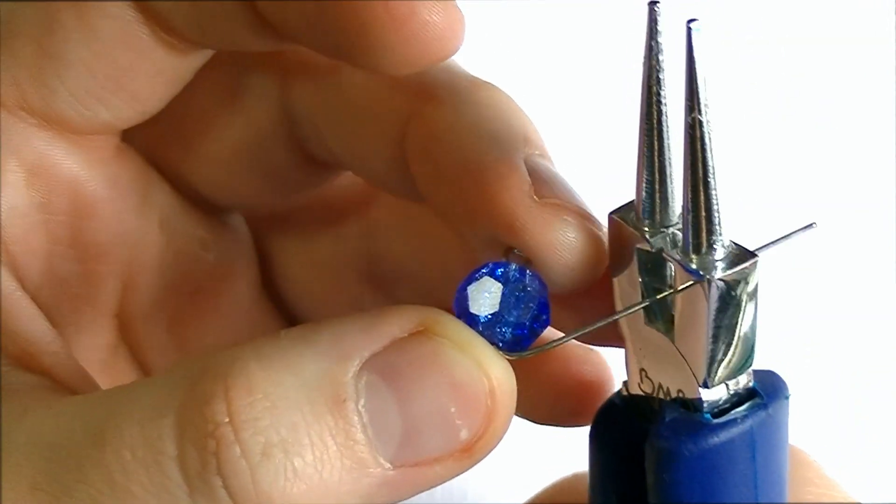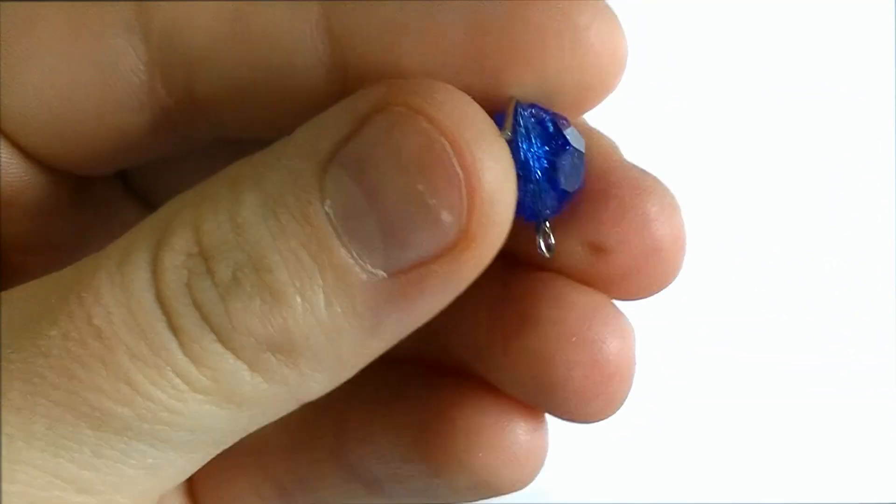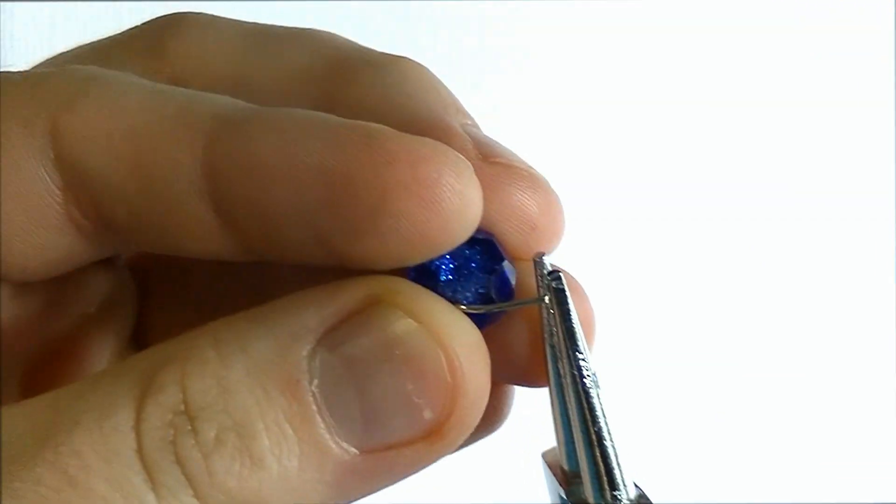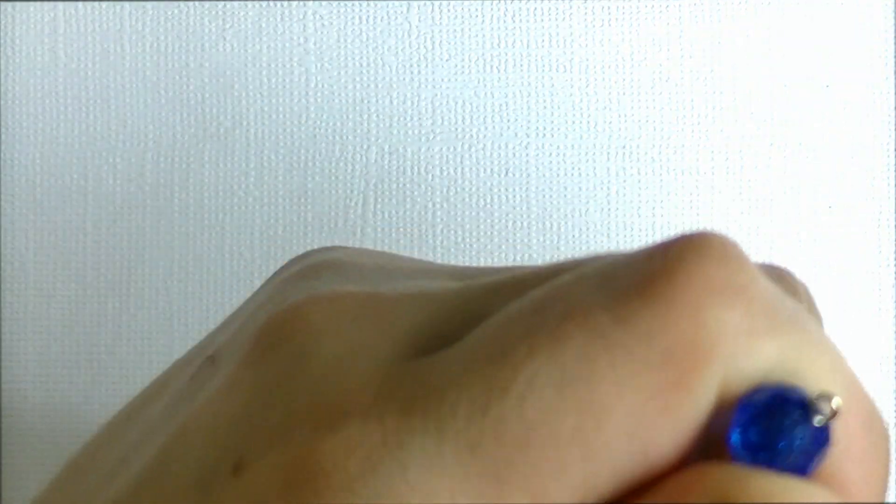You want to put your eye pin into your bead and then bend the remaining bit over the side. Then trim the excess where you'll have at least a quarter of an inch of the eye pin left. Take your jewelry pliers and slowly roll the wire to create another connector for your bead.